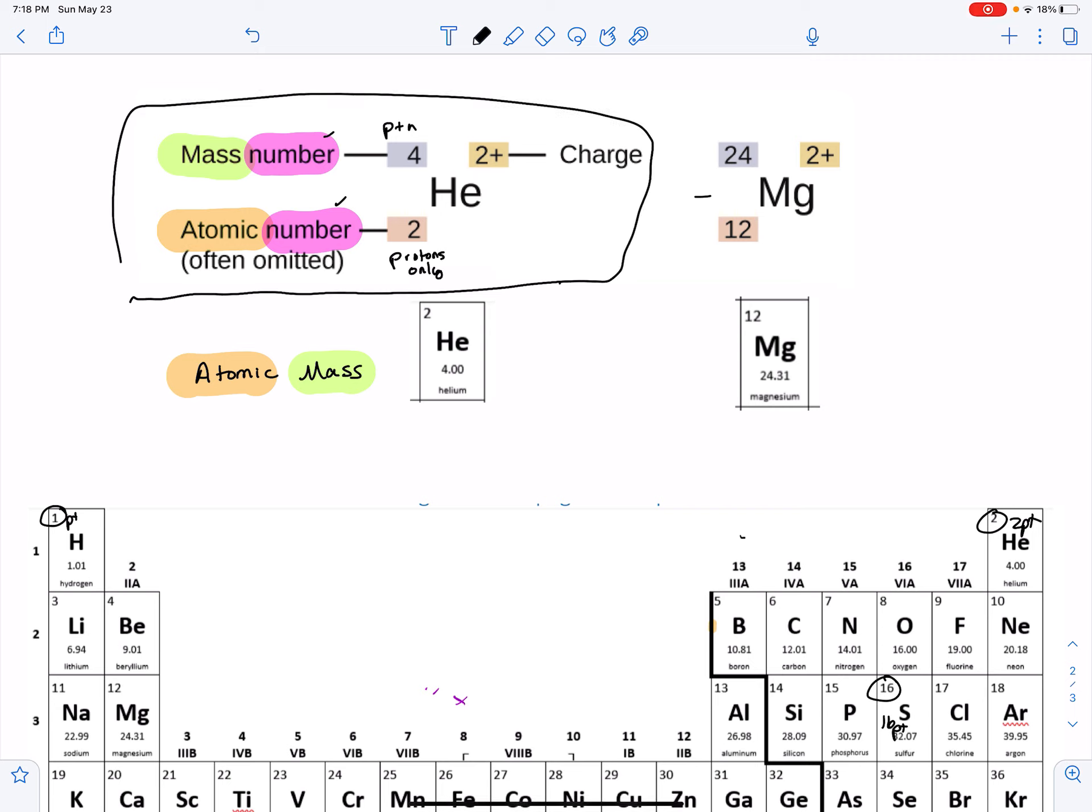If it says number, it can be used in this notation or you get the number, atomic or mass, from that notation. If it doesn't say number, it means it's going to have to come off the periodic chart.